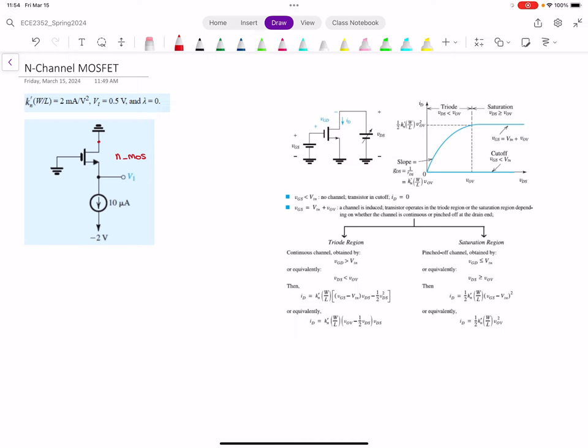This will be our drain, source, and gate. What we're asked to do is find out what is the value of V1.